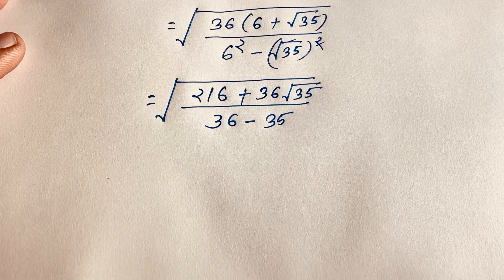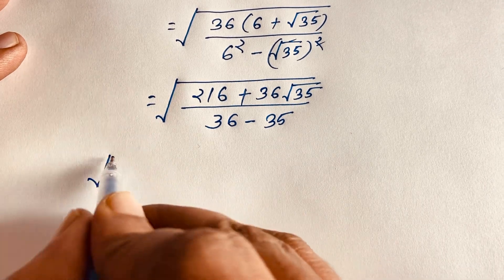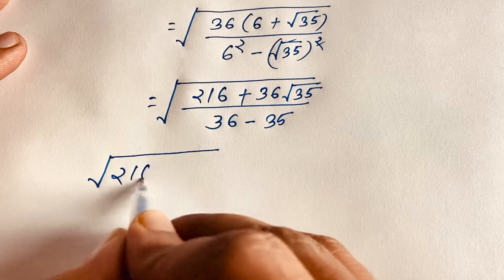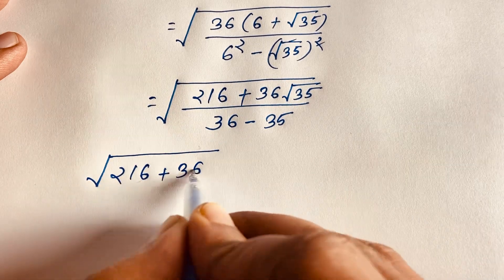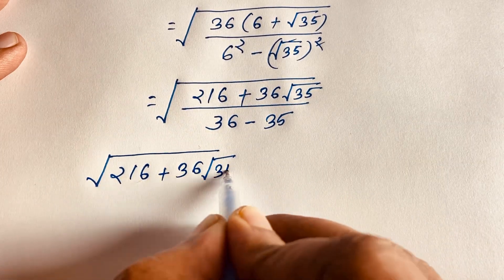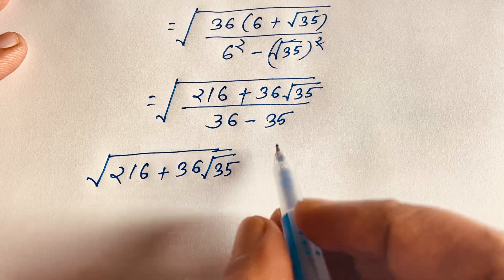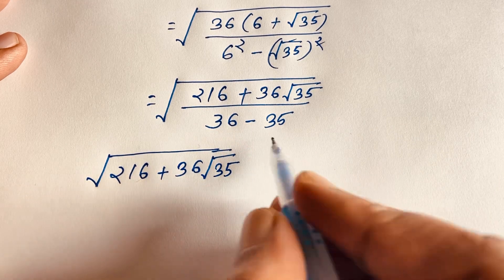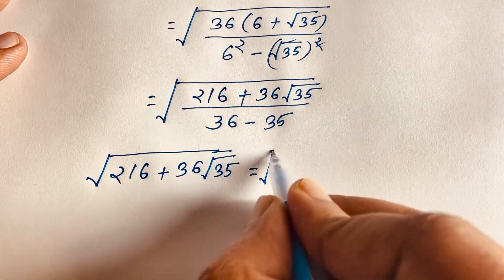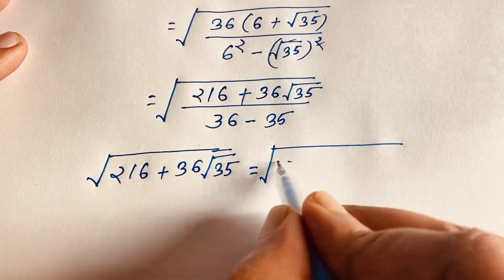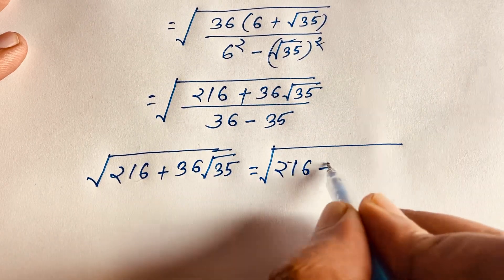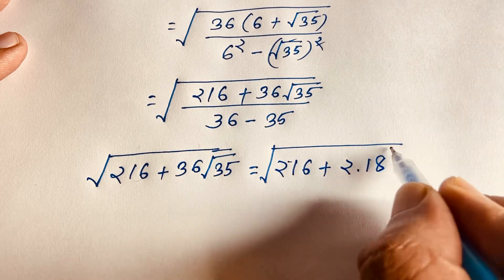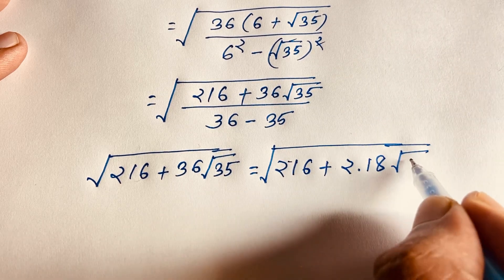This is a nice radical math question. Since 36 minus 35 equals 1, the denominator cancels out. We find square root of (216 plus 36 times square root 35). Now 36 can be written as 2 times 18, giving us square root of (216 plus 2 times 18 times square root 35).